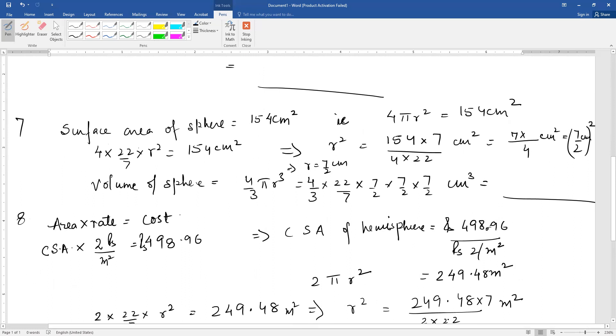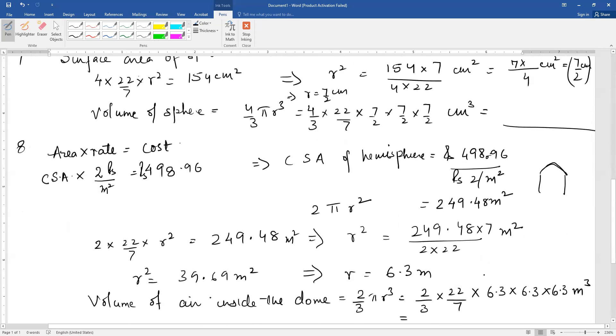Since it's a dome on a building, only the curved surface part was whitewashed, not the base in between. So only curved surface area is involved. From the curved surface area formula, you can calculate the radius. Radius will come out to be 6.3 meter.